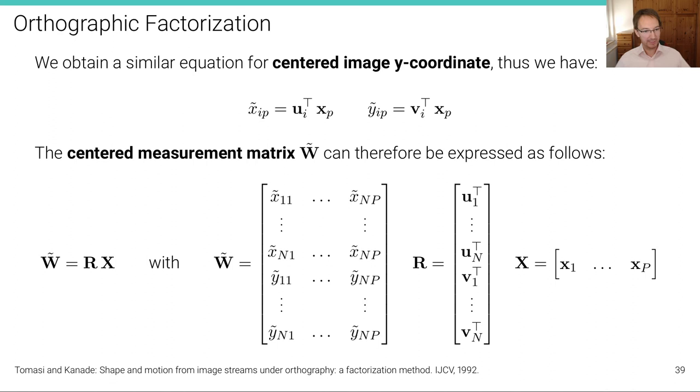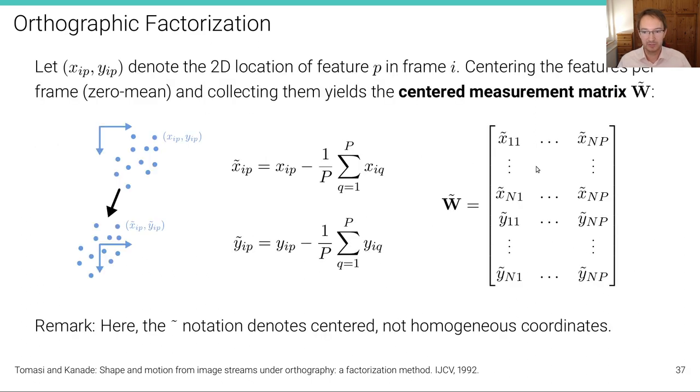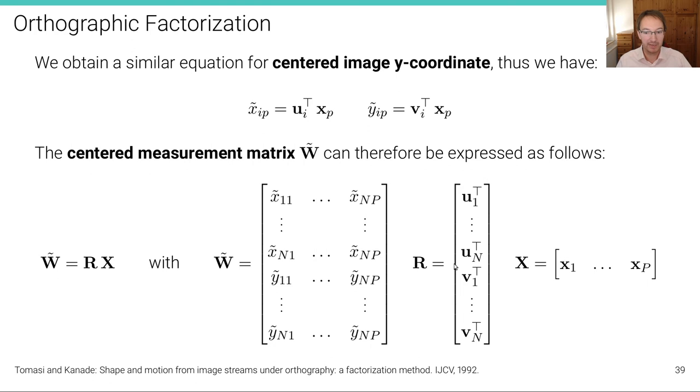Now we can collect all of these centered coordinates into a centered measurement matrix W̃. And we use tilde here for denoting centering, not homogeneous coordinates. And we obtain a very simple linear system, which is W̃ equals RX, where W̃ is now the centered image coordinates. So this matrix is the same as this matrix here. And we have R, which is collecting the axes of the camera coordinate systems, u1, un, v1, vn. And we call this R because these are simply the rotations.